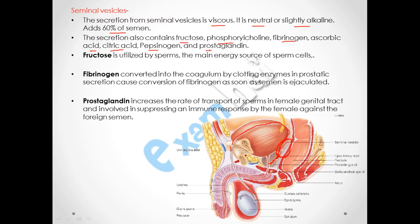Fructose is a molecule similar to glucose that is utilized by the sperm cell and is the main source of energy for the sperm. Every cell needs an energy molecule to perform its functions, and the sperm cell's energy source — fructose — is provided by the seminal vesicle.